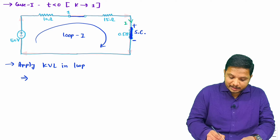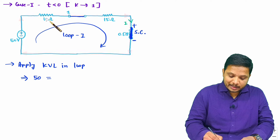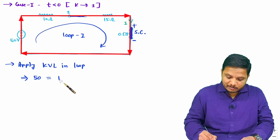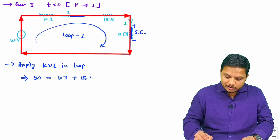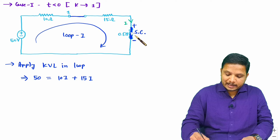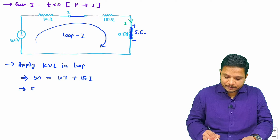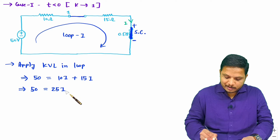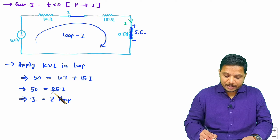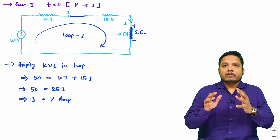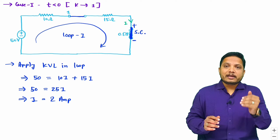The 50V battery goes from minus to plus, so we write plus 50 equals the voltage drop across elements. The voltage drop across the 10 ohm resistor is 10I, and across the 15 ohm resistor is 15I. The inductor is short-circuited so its voltage drop is 0. Therefore 50 equals (10 + 15)I, which is 25I, giving I equals 50/25 equals 2 amperes. So the inductor was short-circuited and energized by a 2 ampere current before t equals 0.